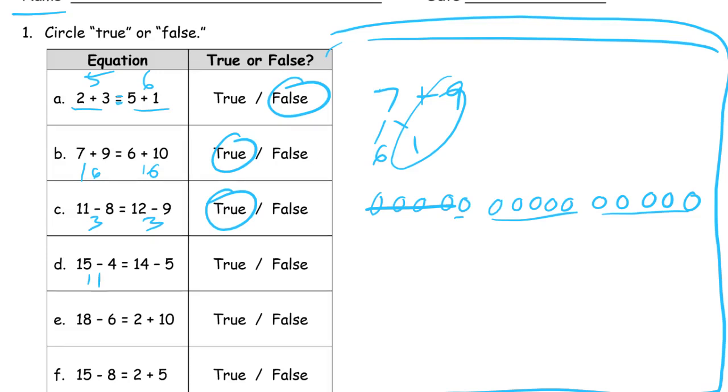And 14-5 is going to be 1, 2, 3, 4, 5, 6, 7, 8, 9, 10, 11, 12, 13, 14, and crossing out 5—1, 2, 3, 4, 5—and we have these 5, 6, 7, 8, 9, that's 9. 11 is not the same as 9, so they are false. And that's how you figure these out. You find out, solve each expression, and find out if they're the same.